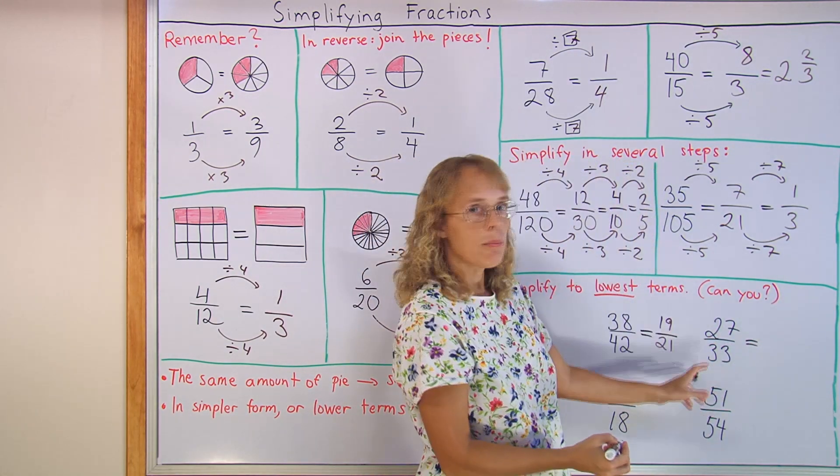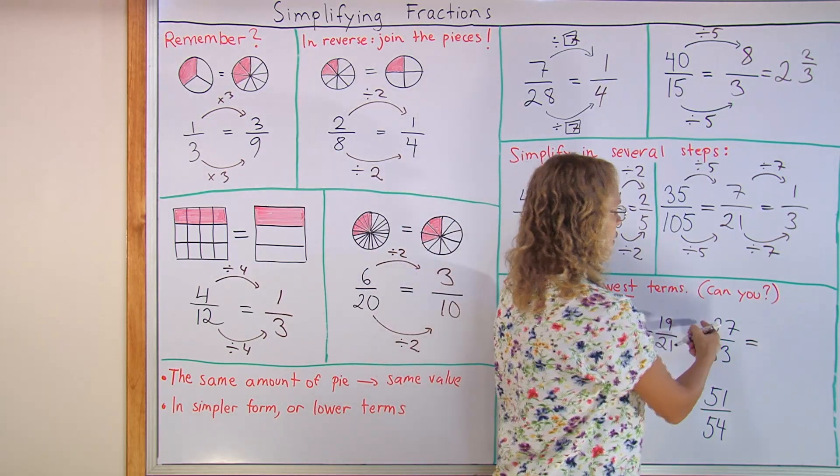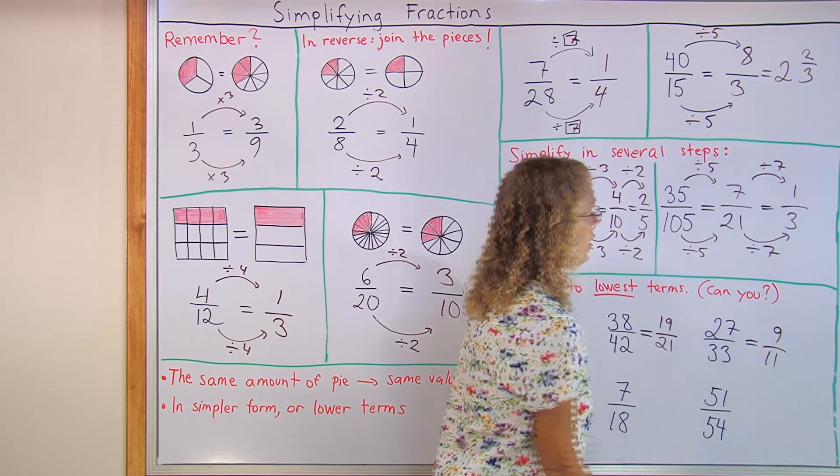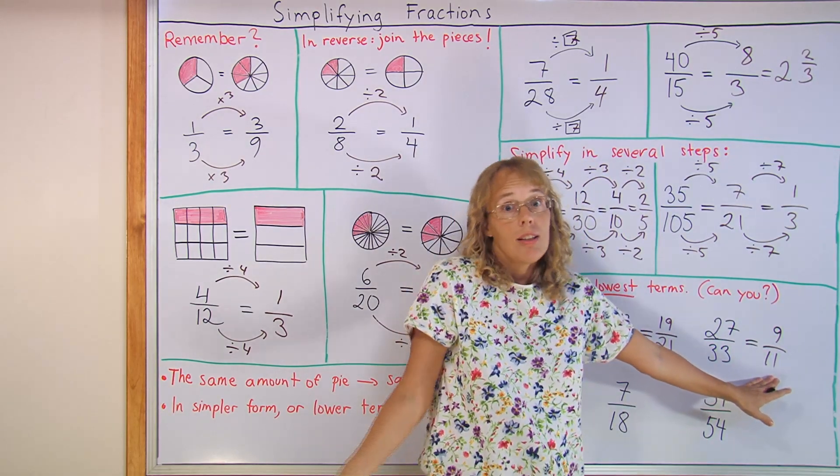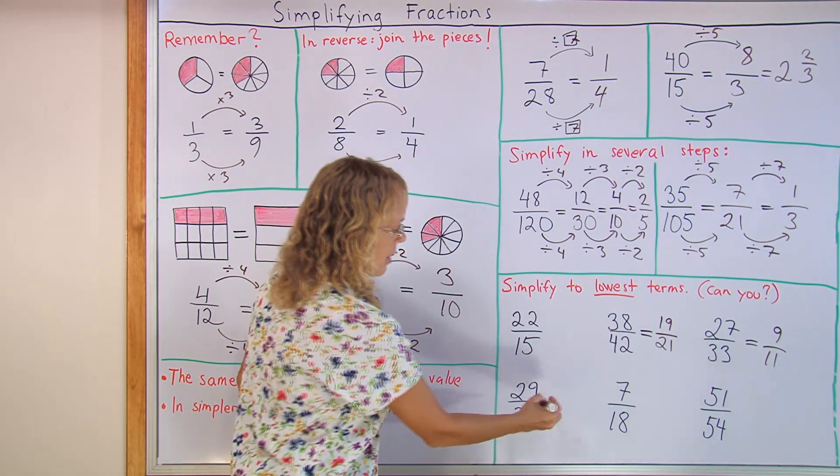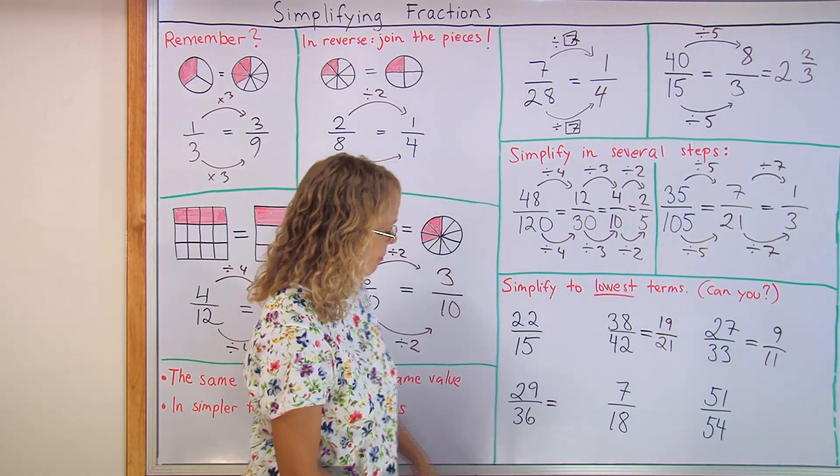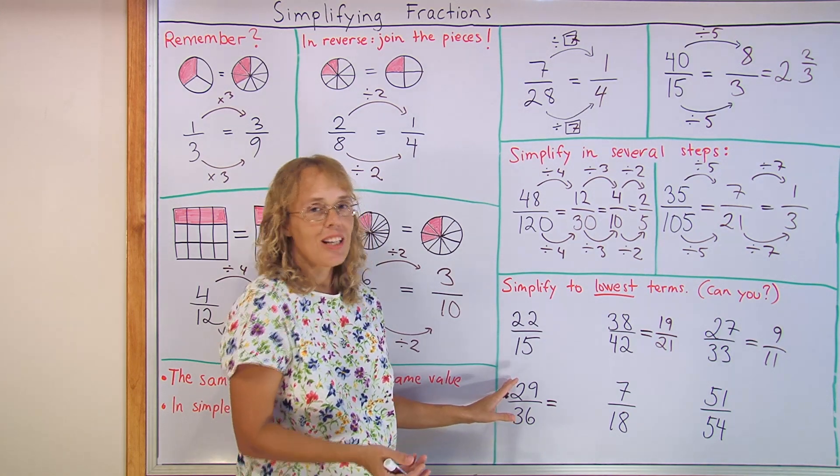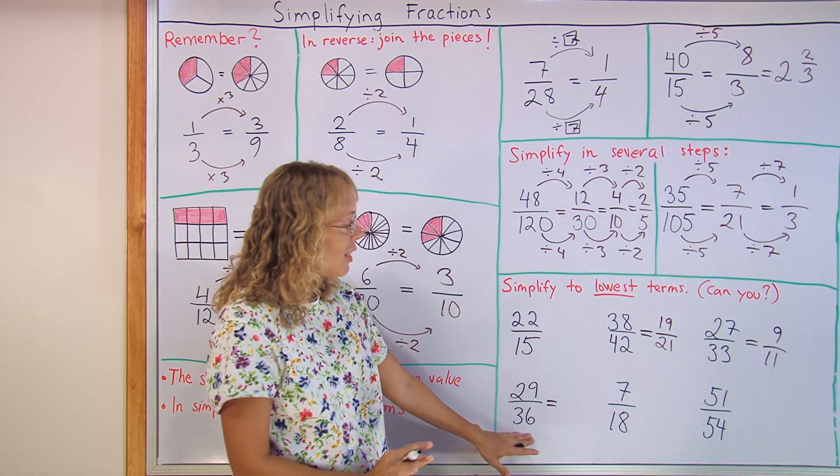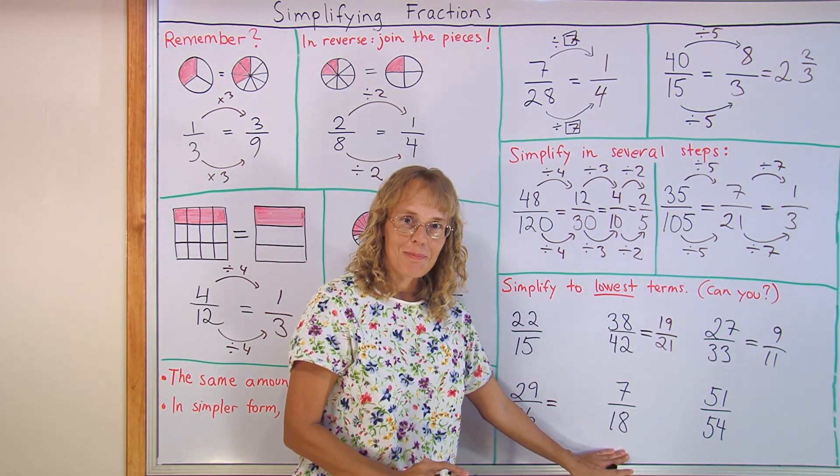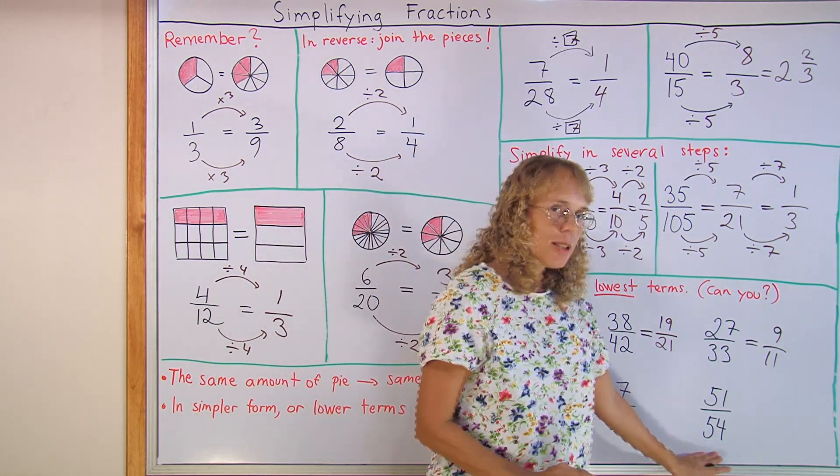Here, both are divisible by three. Twenty-seven divided by three is nine. And this one divided by three is eleven. Nine over eleven. Nine doesn't simplify any further because eleven is prime. And here, twenty-nine is prime. I cannot simplify this any further at all. It is already in its lowest terms. The same is true of this one.